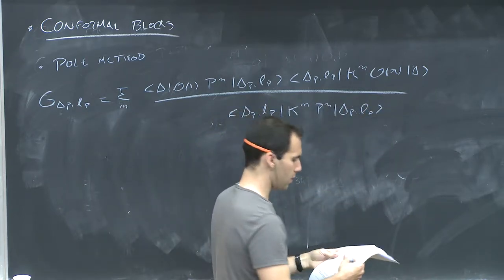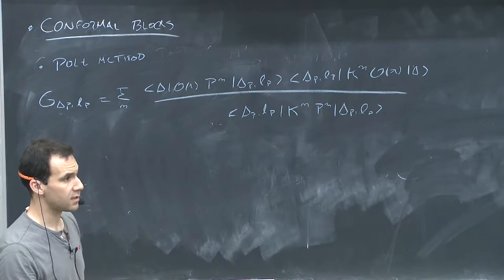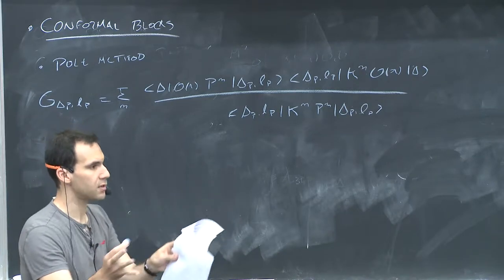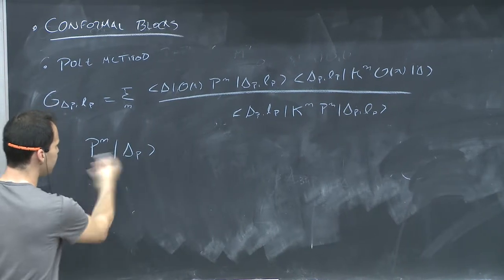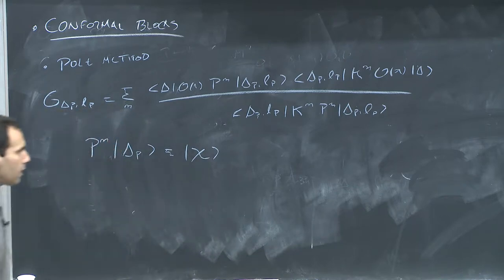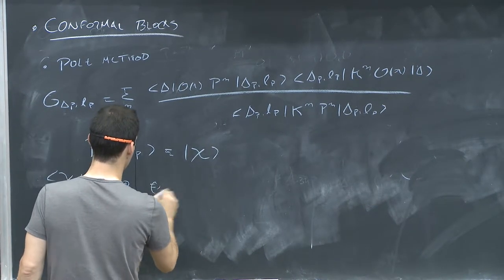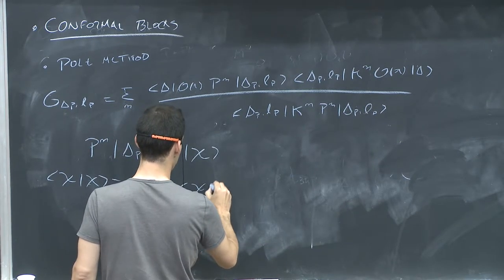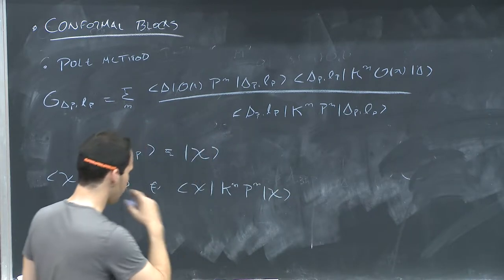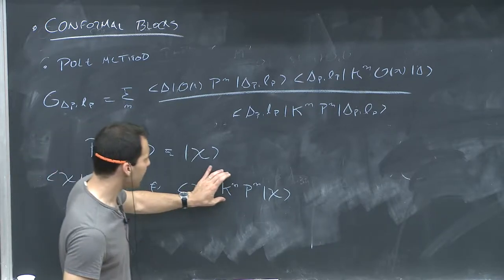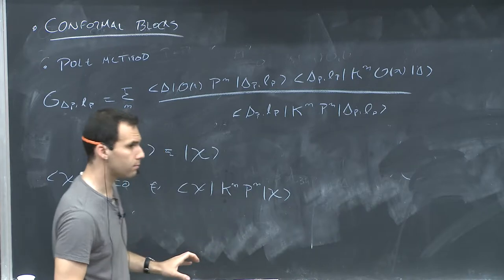If the norm is zero, this descendant becomes a null state. Something you can show is that if a certain descendant is a null state, then all its descendants are also null, and they form a separate representation of the conformal group. Suppose you have some state chi with zero norm. This is zero, but what's this? This is the same as chi, K_n, P_n, chi — telling you that K acting on this state has to kill this state. It's the only possibility.